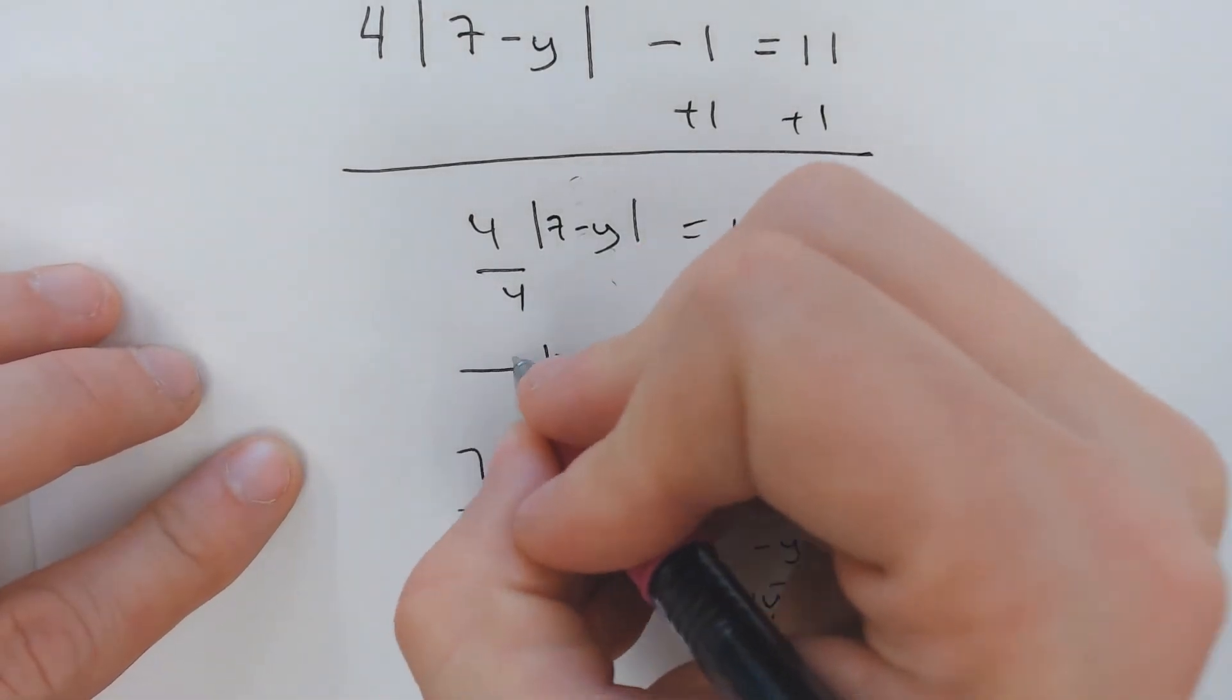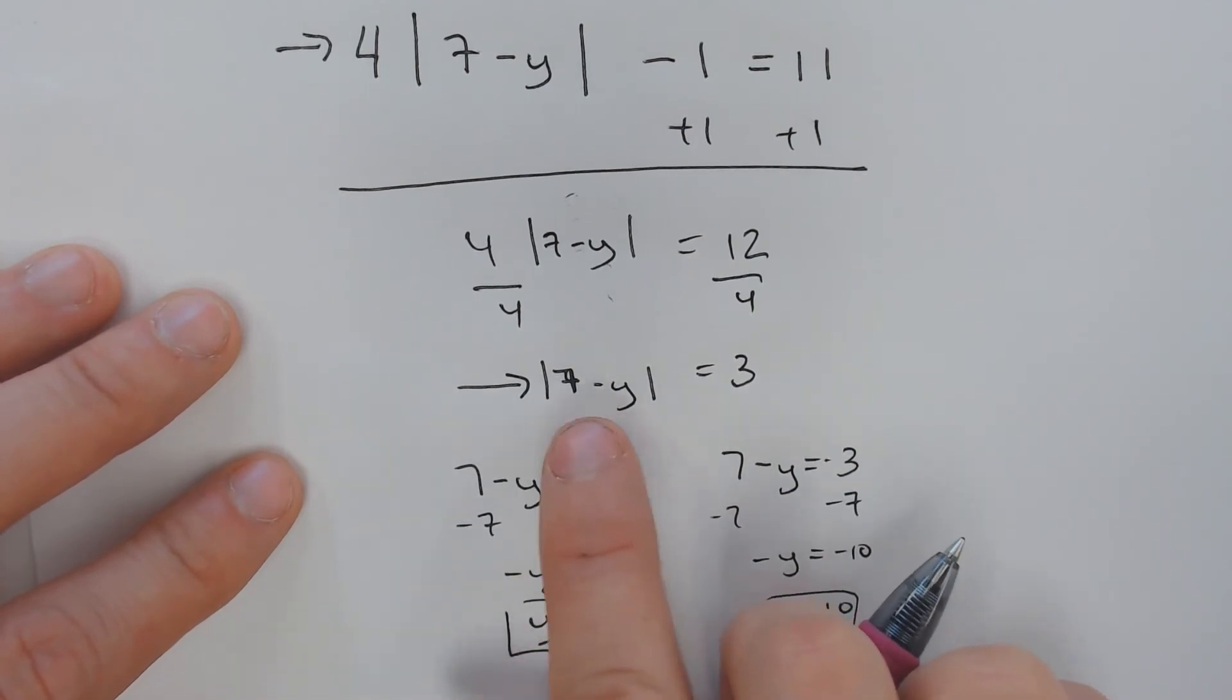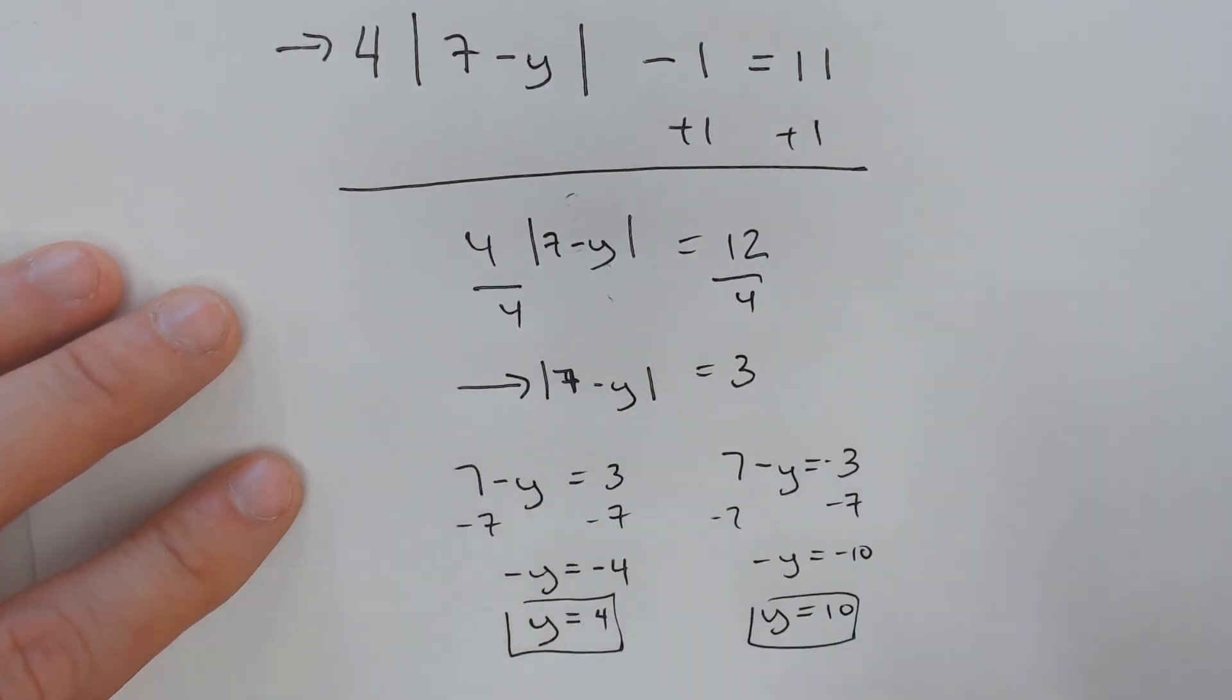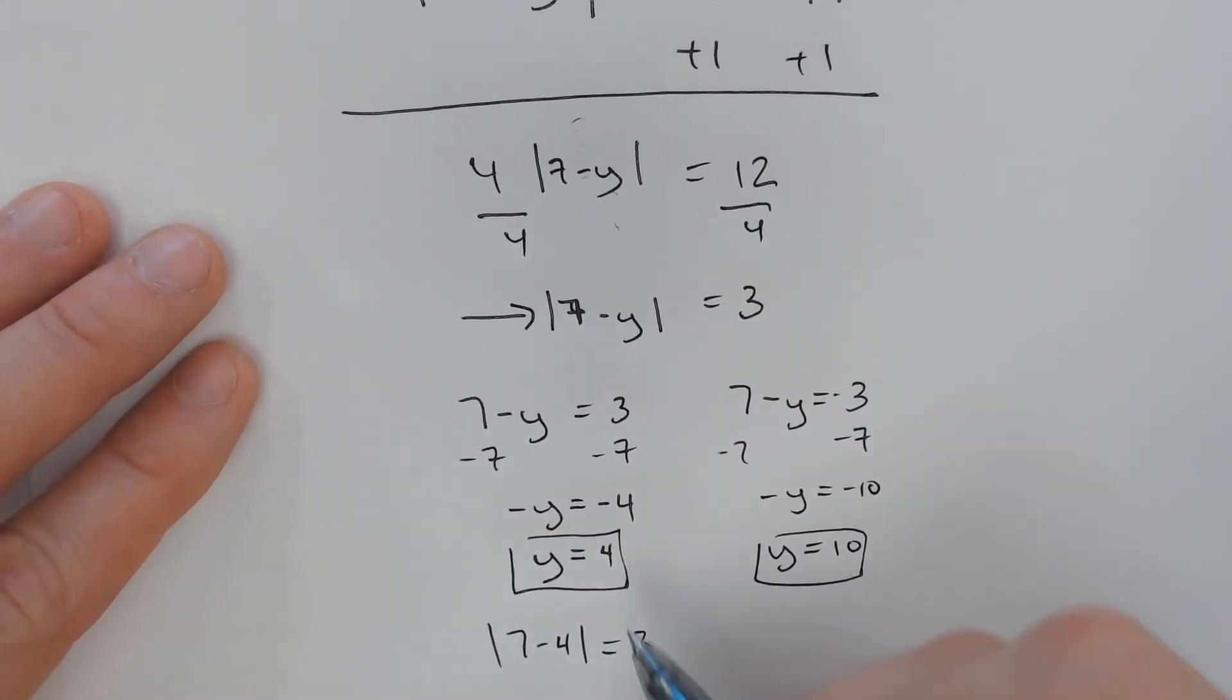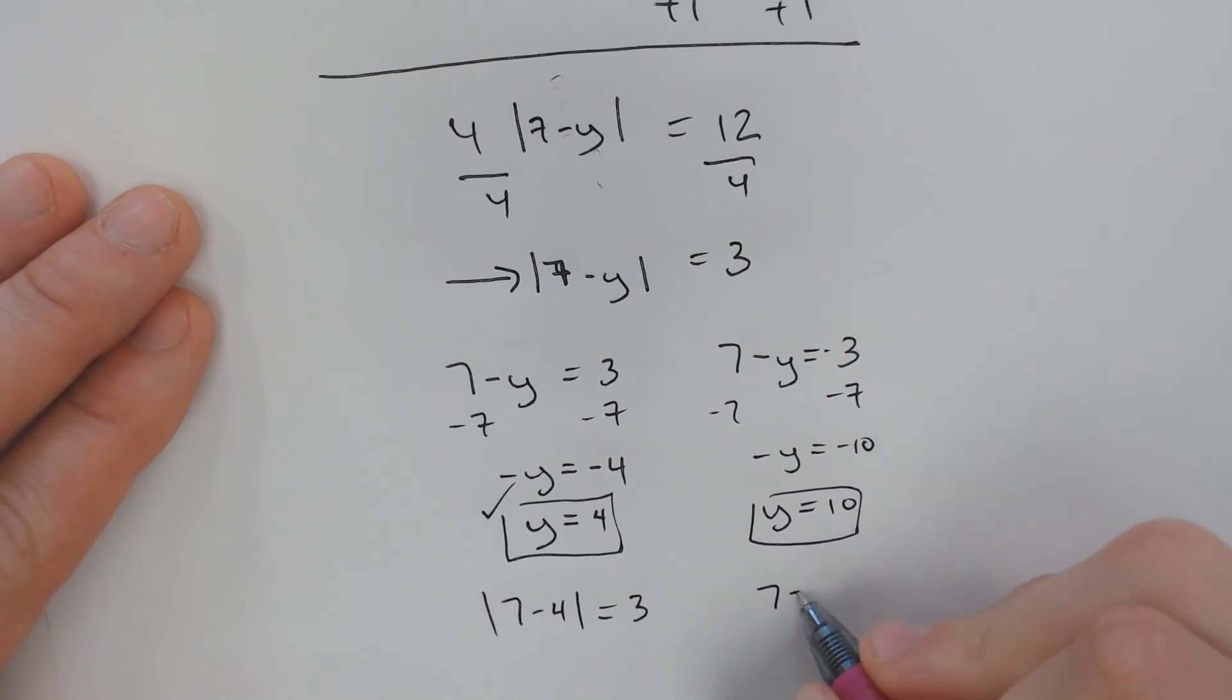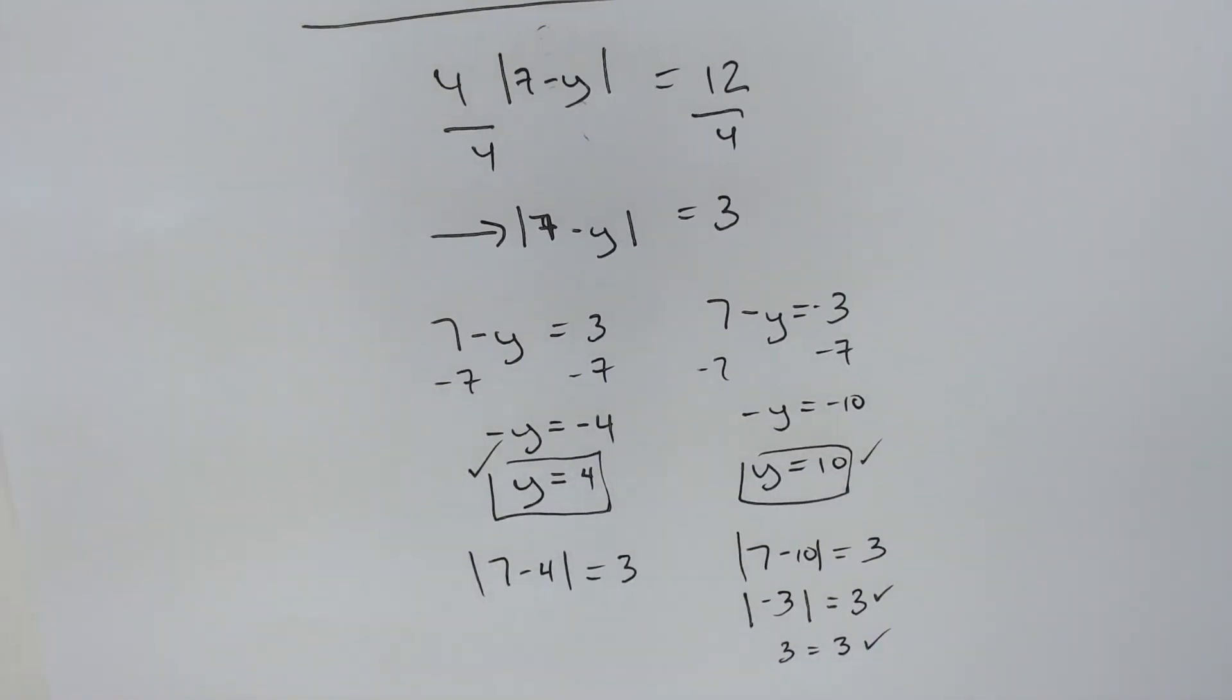I would recommend plugging them into the easiest version of the equation, but the safest way is to plug it into the original. But this is still the same equation, so we can plug it into this one and save ourselves a little bit of time. If we plug in 4, 7 minus 4 is 3. Is the absolute value of 3 equal to 3? Yes, which means the 4 works. 7 minus 10 equals 3. Well, the absolute value of negative 3 is still equal to a positive 3, so this one also works. Normally they will work.